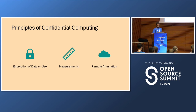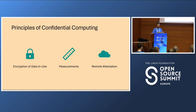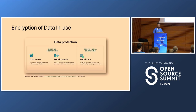The key principles of confidential computing can be sliced in different ways. I would point out three key elements: encryption of data in use, the principle of measurements, and remote attestation. We'll go into detail on each of those.